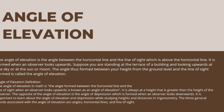Angle of elevation is the angle between the horizontal line and the line of sight which is above the horizontal line. It is formed when an observer looks upwards. Suppose you are standing at the terrace of a building and looking upwards at the sky, the sun, or the moon. The angle thus formed between your height from the ground level and the line of sight formed is called the angle of elevation.